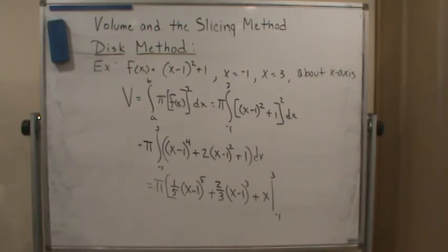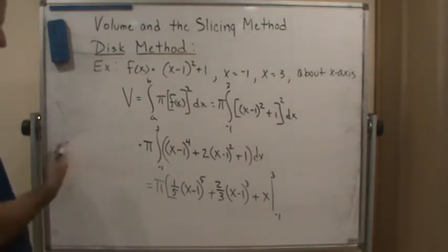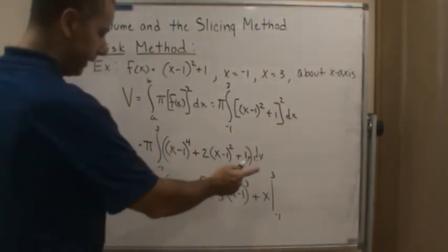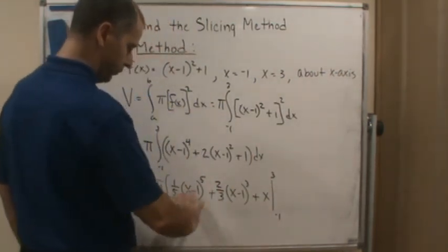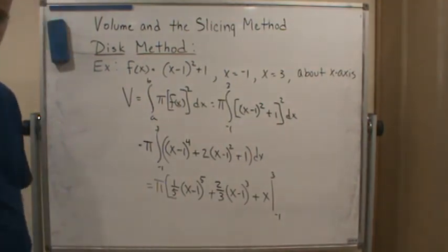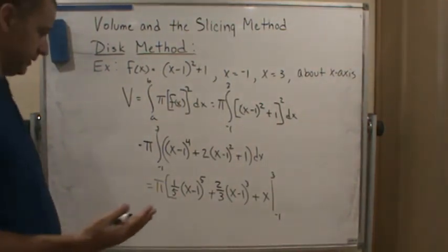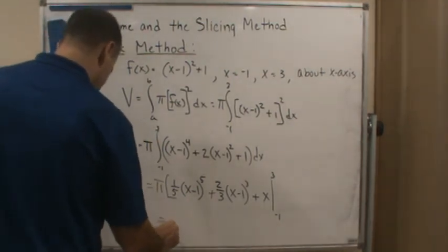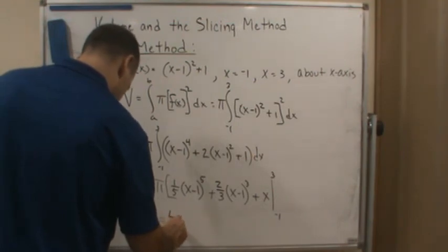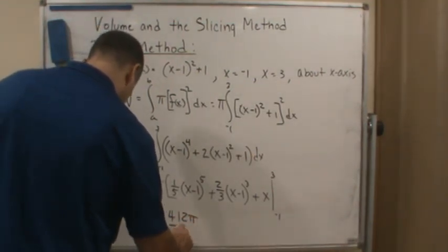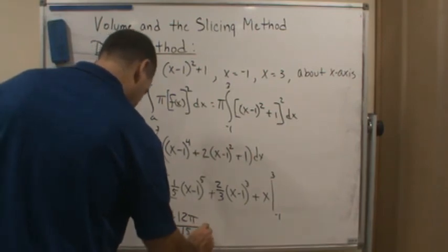Now at this point, all we have to do is evaluate this. We're going to evaluate it at 3, so we'll plug in 3 for x, and then we're going to evaluate it at negative 1, and then we're going to subtract those two. Just make sure you take your time. It's easy to make sign errors. You should get 412 pi over 15 cubic units.